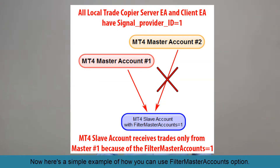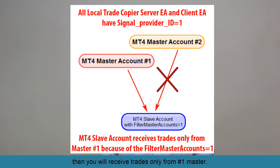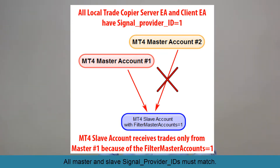Here's a simple example of how you can use the filter master accounts option. Say you have master account number one and master number two. If you enter filter master accounts one on the client EA, then you will receive trades only from master account number one. All master and slave signal provider IDs must match.